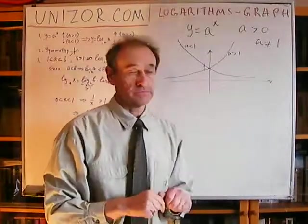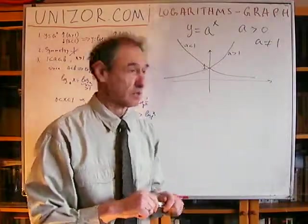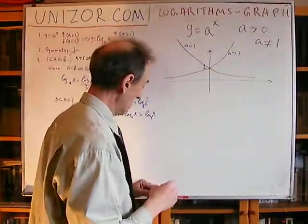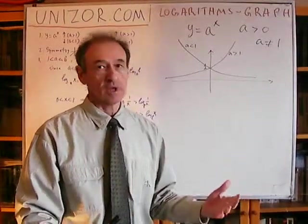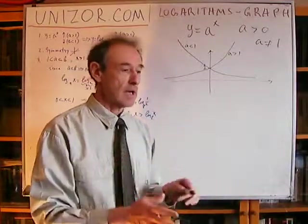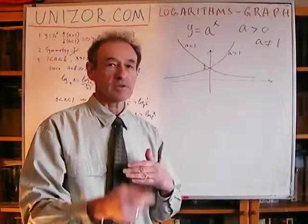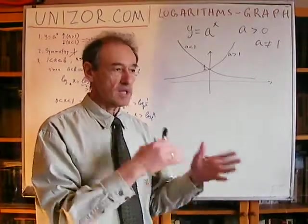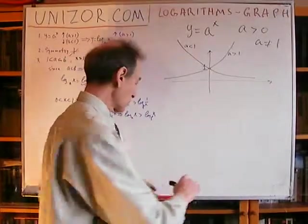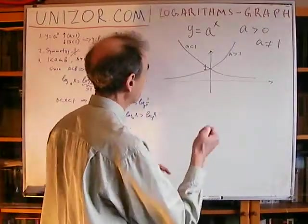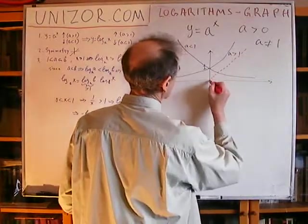If necessary, just refresh your memory and go to the lectures about exponential function. Now, we have to understand that the logarithmic function is an inverse, by definition, of the exponential function. As I explained in lectures about monotonic and inverse functions, the graph of the inverse function is symmetrical to the graph of the original function relative to the angle bisector between the x and y axes. This is the angle bisector, and the log graph is symmetrical relative to this line.